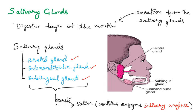The submandibular gland is present near the mandible, and the sublingual gland is present near the tongue. 'Lingual' means tongue, and 'mandible' refers to the jaw area. So it is known as submandibular, and the one near the tongue is known as sublingual. These glands secrete saliva, which contains salivary amylase. Salivary amylase helps in the partial breakdown of carbohydrates.